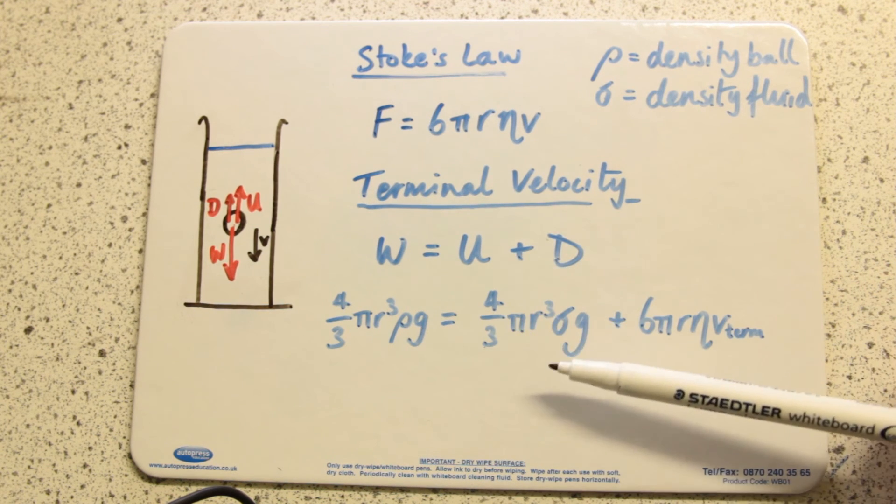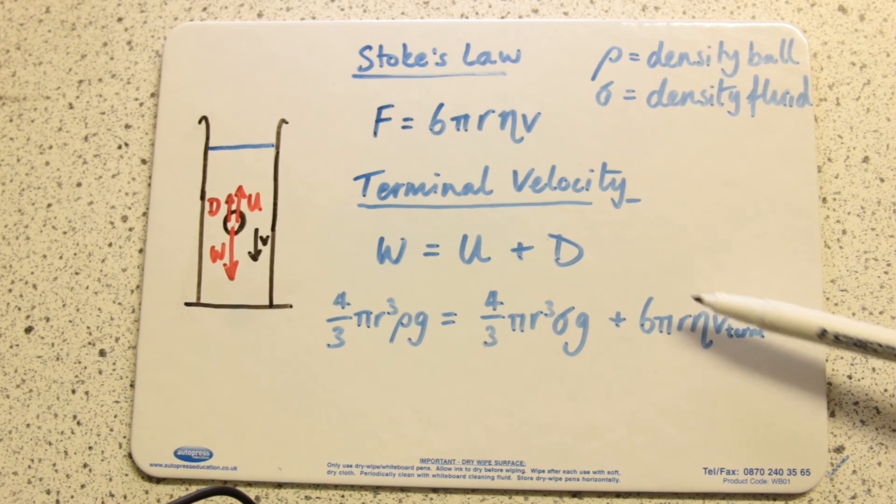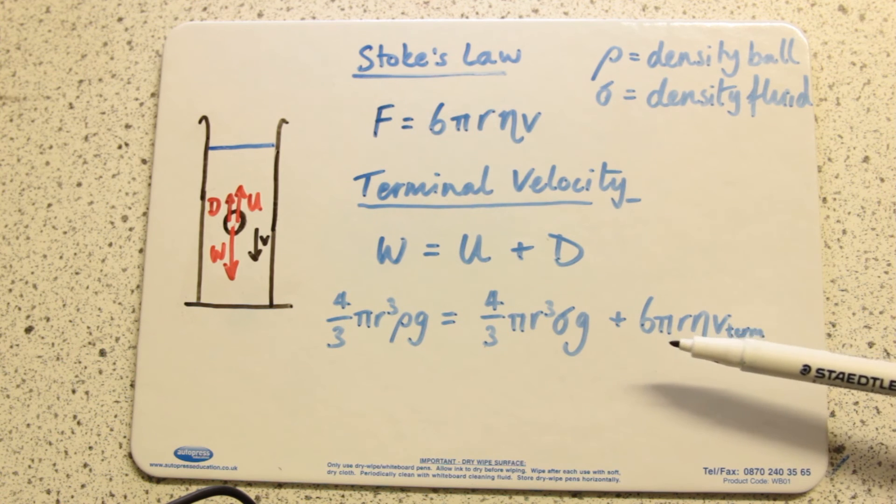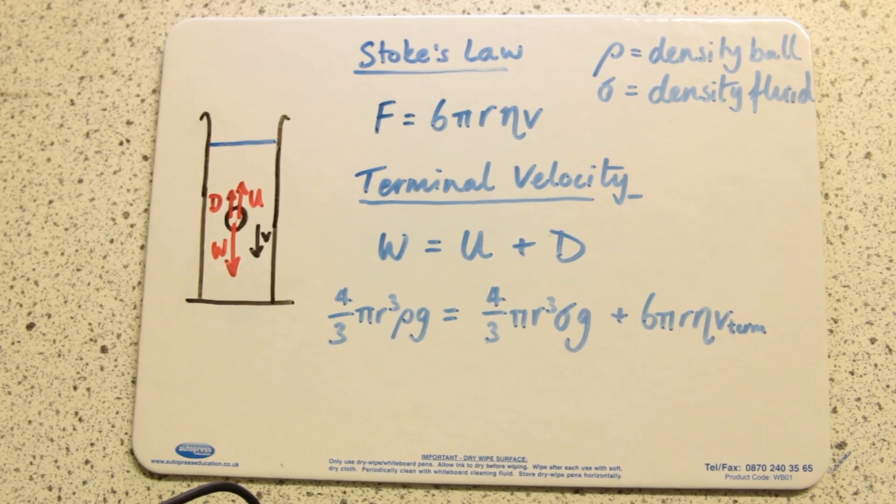Plus the Stokes force, that's the drag, 6πrηV_term, because this is the situation at terminal velocity. Let's get to an equation for terminal velocity.